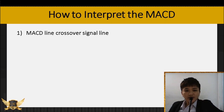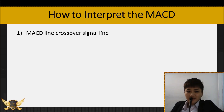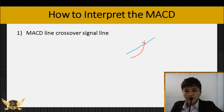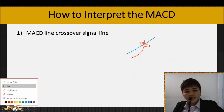The first way is when the MACD line crosses over the signal line. Let's say this is your MACD line — when the signal line comes and crosses over, this is what I mean by a crossover. Later I'm going to give you some examples.